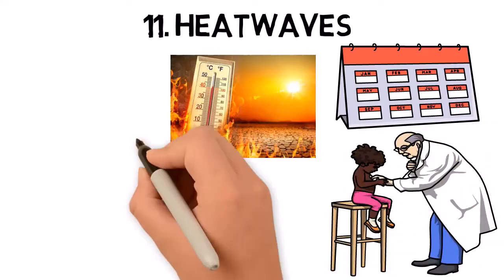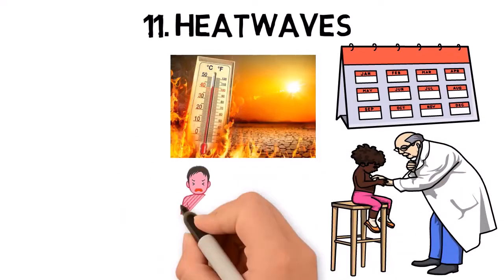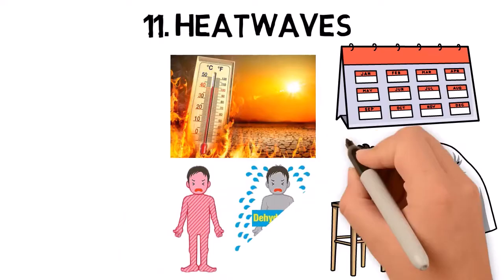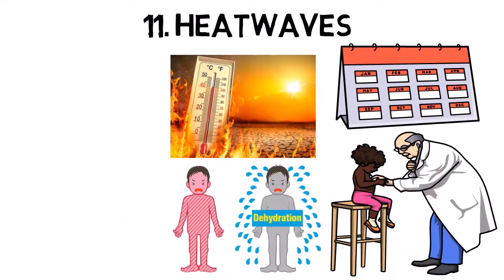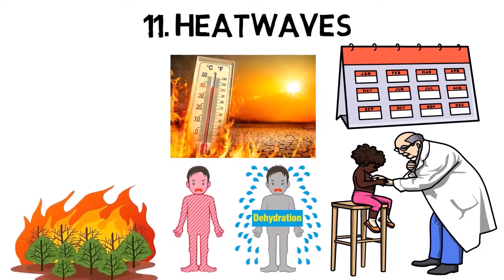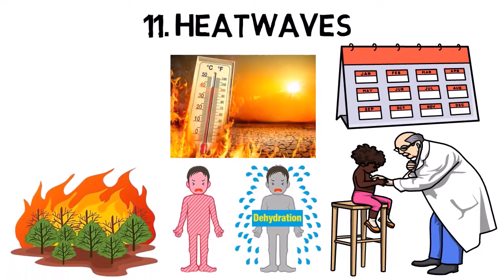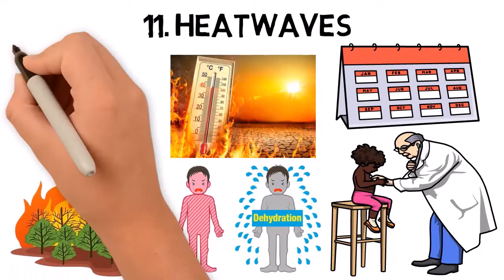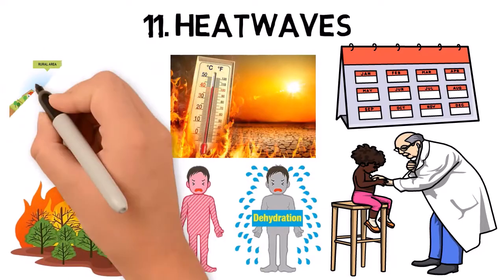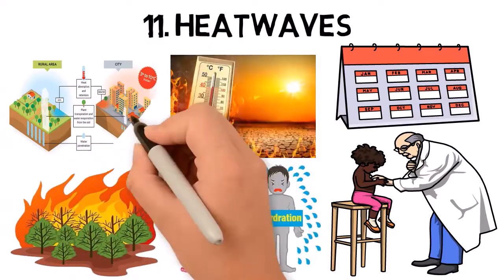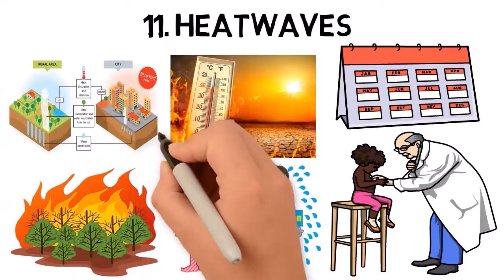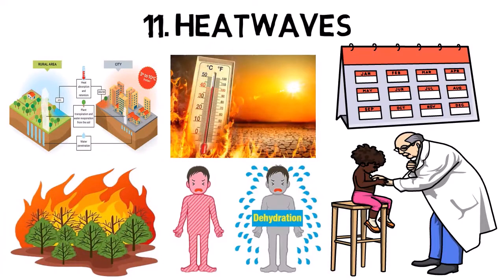Heatwaves can lead to heat exhaustion, heat stroke, and dehydration. They can also exacerbate drought conditions and increase the risk of wildfires. Urban areas are particularly vulnerable to heatwaves due to the urban heat island effect, where concrete and asphalt absorb and retain heat.